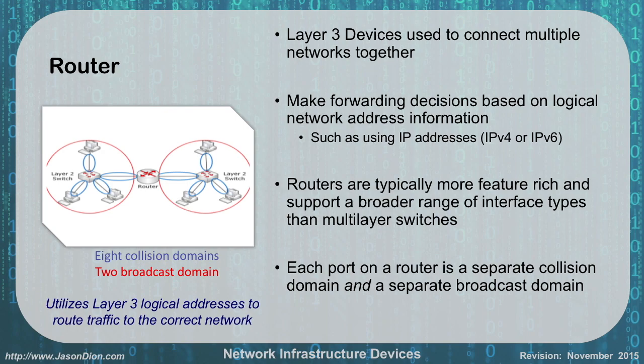A router is a layer 3 device used to connect multiple networks together. It makes its forwarding decisions solely based on IP addressing — either IPv4 or IPv6. Routers are typically much more feature-rich and support a broader range of interfaces than a multi-layer switch, even though multi-layer switches can do some routing. Each port on a router is its own collision domain and its own broadcast domain. In the diagram, you can see the blue circles representing individual collision domains on every port, and two broadcast domains broken apart by the router in the center.